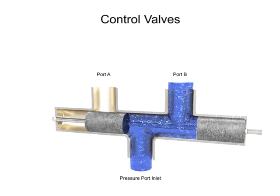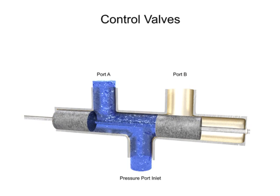Directional control valves are identified by the number of ways that fluid can flow and the number of positions the valve can produce.